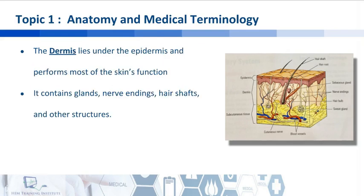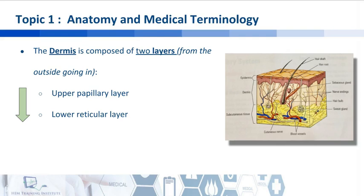Underneath the epidermis lies the dermis, and it is the dermis which performs most of the skin's functions. Within the dermis are the glands, the nerve endings, the hair shafts, and other structures. While the epidermis has five layers to it, the dermis is composed of two layers. From the outside going in, first you will hit the upper papillary layer, and then the lower reticular layer.